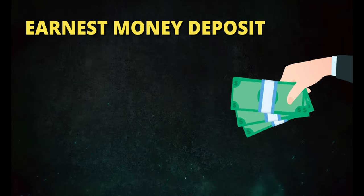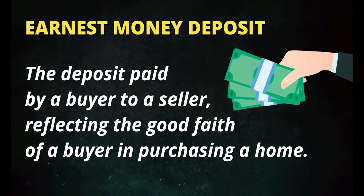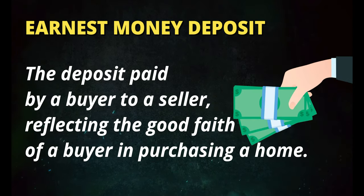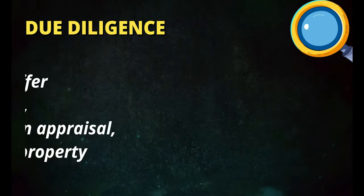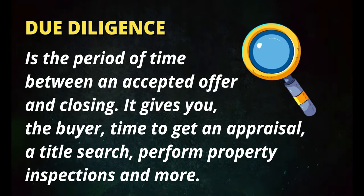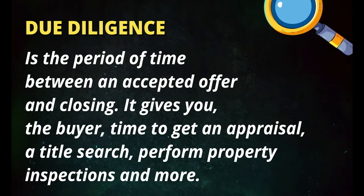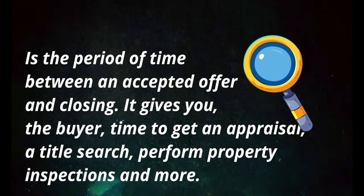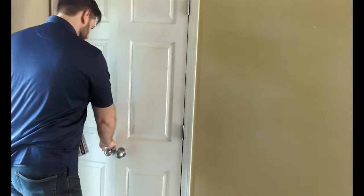Earnest money deposit is very common in any kind of real estate — it's your way of showing interest in the property. You put down 1% or $5,000 or whatever amount you negotiate, essentially telling the seller you're serious. Due diligence is the period after the property's under contract where you figure out what the property is actually performing at, do your inspections, and verify whether what the seller disclosed in the listing is accurate or if there are any surprises.